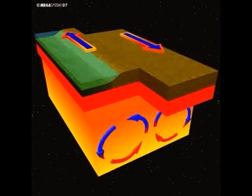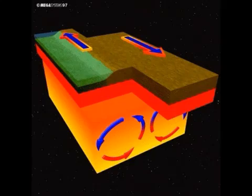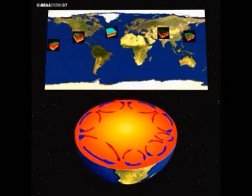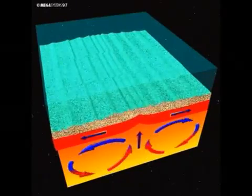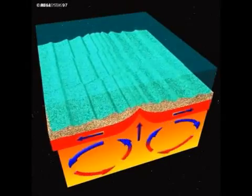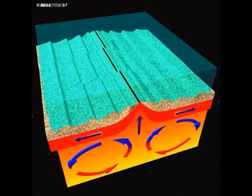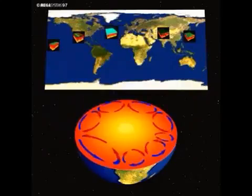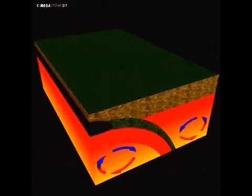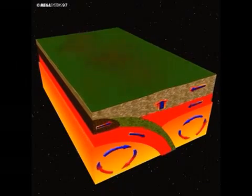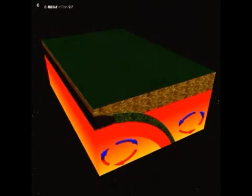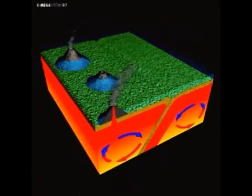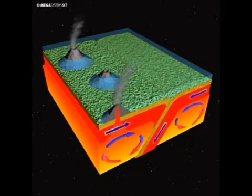Convection is the movement of liquid material that is heated from underneath, rises and cools on top. Hot material has a lower density and rises, while cold material has a higher density and thus sinks. Where hot material flows upwards and outwards, the plates slide past each other or separate. Where cold materials sink to the bottom, it pulls one of the plates down with it.